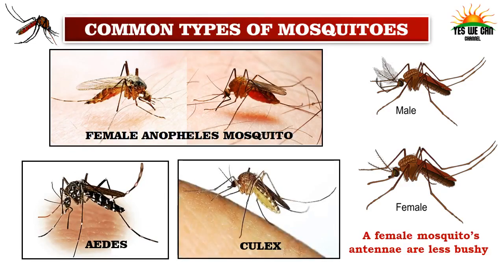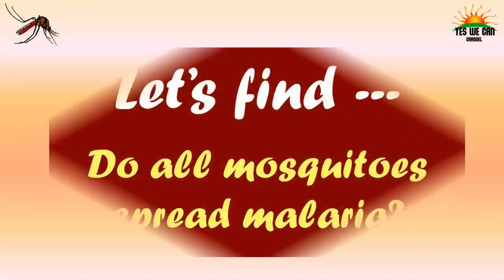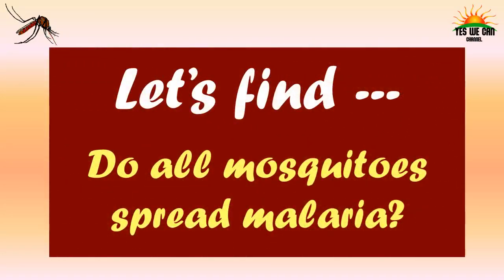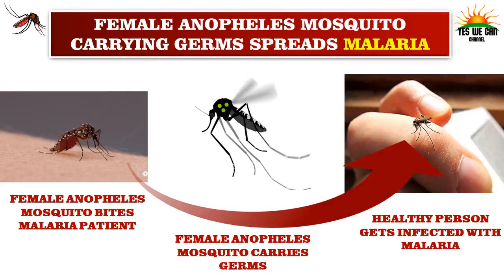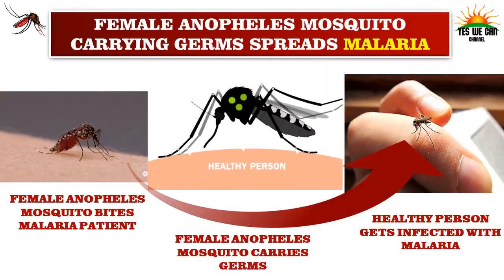Why are all the disease-spreading mosquitoes female? This is because males do not feed on blood. Only female mosquitoes feed on blood; males only eat flower nectar. Female mosquitoes eat both flower nectar and blood. A male mosquito's antennae are much bushy, while a female mosquito's antennae are less bushy. Do all mosquitoes spread malaria? No — only female Anopheles mosquitoes carrying germs spread malaria.